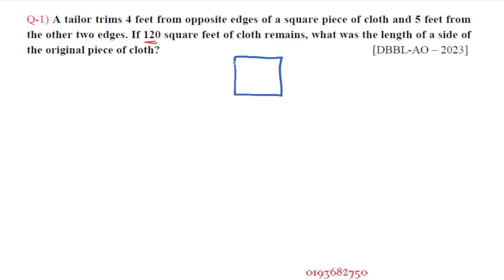Let's say the original piece of cloth has side a. From two opposite sides 4 feet were cut, and from the other two opposite sides 5 feet were cut. The original piece of cloth is a square, so after cutting we have (a minus 8) times (a minus 10).